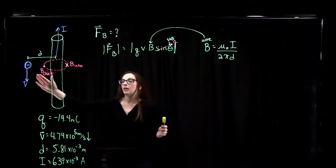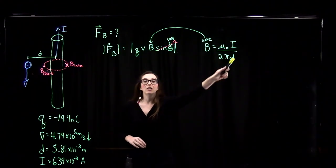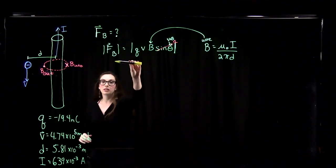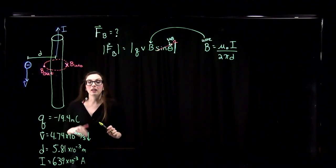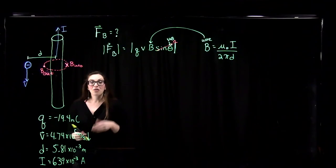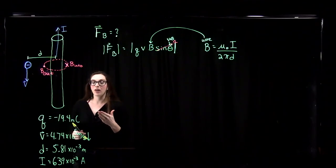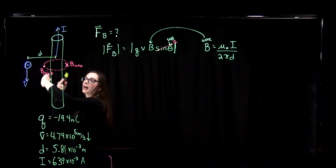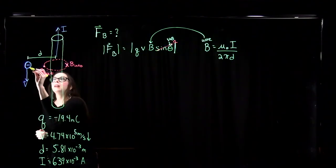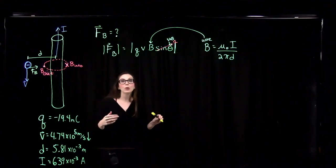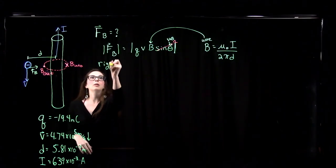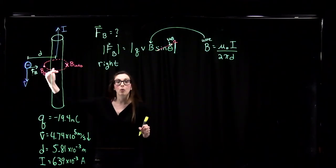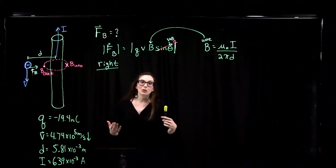So the magnetic force on the charged particle equals QVB. To find the direction, we use the first right-hand rule: thumb in the direction of V (downward), fingers in the direction of B (out of the page). For a negatively charged particle, the back of the hand indicates the force direction — pointing to the right, meaning the particle is attracted toward the wire.